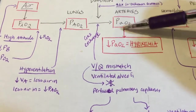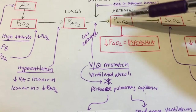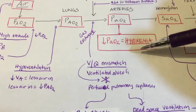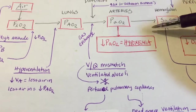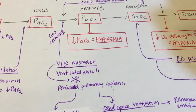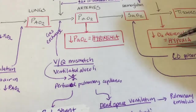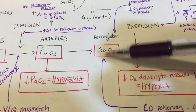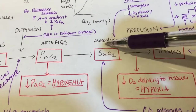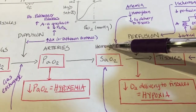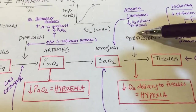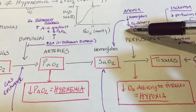Everything discussed up to this point affects arterial partial pressure of oxygen and causes hypoxemia. Everything past this point causes hypoxia only — though remember, all causes of hypoxemia also cause hypoxia. Starting with SaO2 — oxygen saturation reflecting oxygen bound to hemoglobin — the first cause is anemia: not enough hemoglobin means you can't carry enough oxygen to the tissues, causing decreased oxygen delivery.